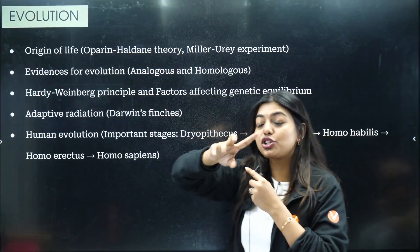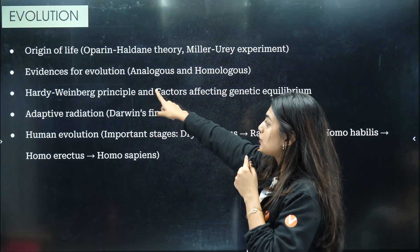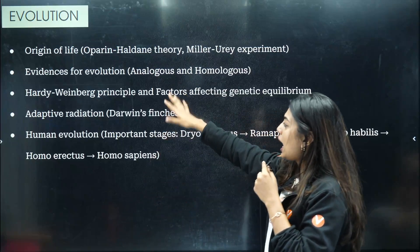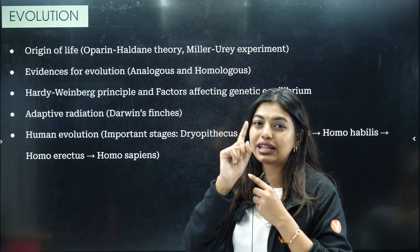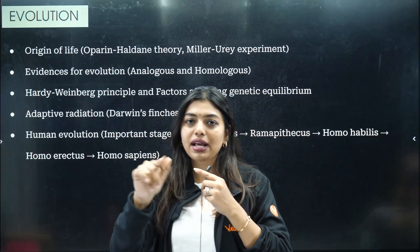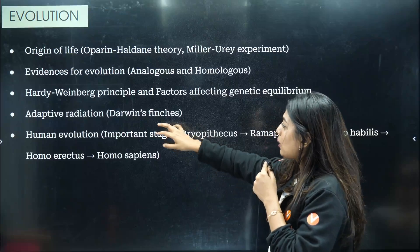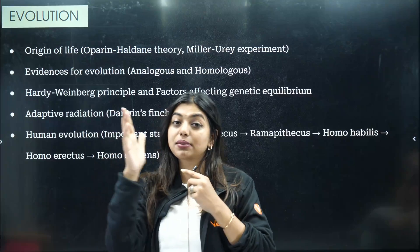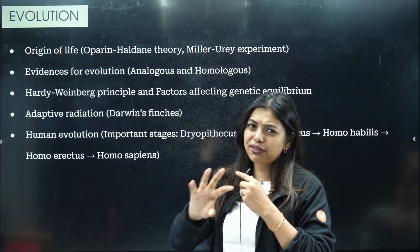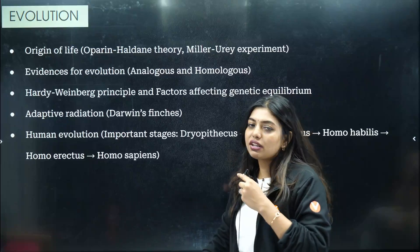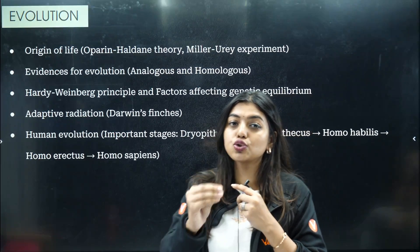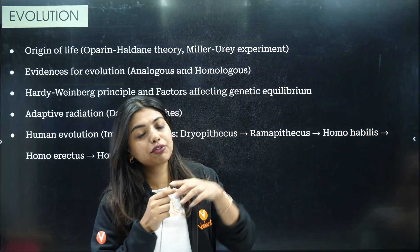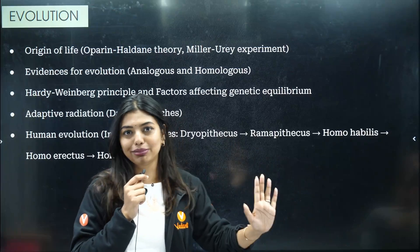Please watch my one-hour lecture to understand the theory. Evidence of evolution — analogous and homologous differences will be asked for two or three marks. Hardy-Weinberg principle — they can ask you the equation; that graph is also very important: stabilizing, disruptive, and directional — just go through it. Adaptive radiation — they have asked about Darwin's finches; just know the definition and what it is. Human evolution has been asked many times — you should know Ramapithecus, Australopithecus. Remember the trick. Watch my lecture to be able to understand it.